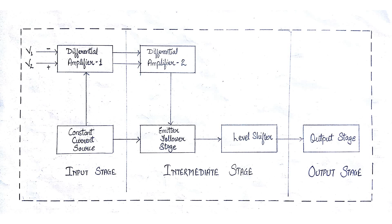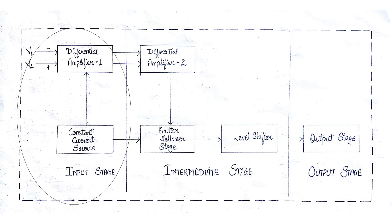The op amp has three stages: input stage, intermediate stage, and output stage. The input stage is the first stage and has the following characteristics: high CMRR (common mode rejection ratio), high input impedance, wide bandwidth, and low input offset. This stage consists of a differential amplifier, and a transistor is biased to act as a constant current source, which greatly increases the CMRR of the differential amplifier.